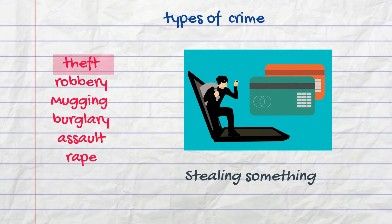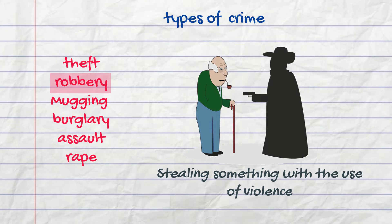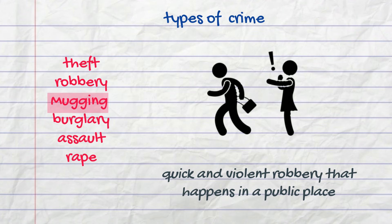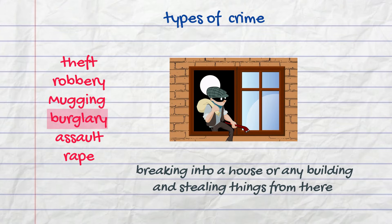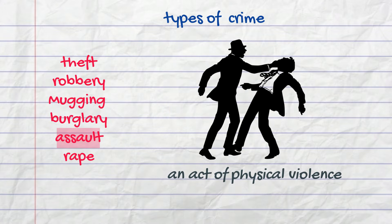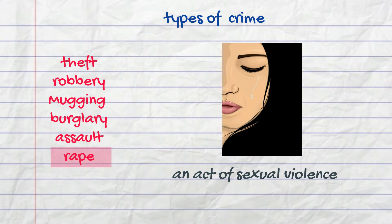Stealing something is called a theft, but when it happens openly with the use of violence, then it's a robbery. Mugging is a type of robbery, quick and violent, that happens in a public place. Breaking into a house or any building and stealing things from there is a burglary. Just an act of physical violence is an assault, only if it happens without stealing, otherwise it turns into a robbery. Sexual violence is called a rape.